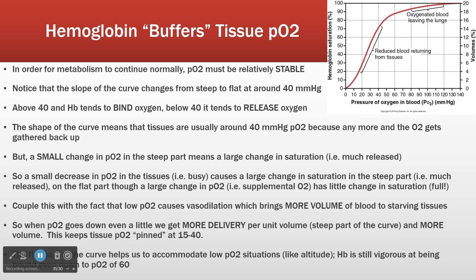A small change in PO2 in the steep part means a large change in saturation, so even a small increase in oxygen increases saturation a lot. More importantly, in medicine we talk about saturation like it's a good thing — it's a carrying state. A 99% saturated patient is a full truck, and a full truck isn't doing the body any good. The good happens as it drops off. A drop from 60 to 30 is not a bad thing — that's releasing 30% of the oxygen bound to hemoglobin into the tissues where it's desperately needed. That 40 tends to keep us in that narrow range.